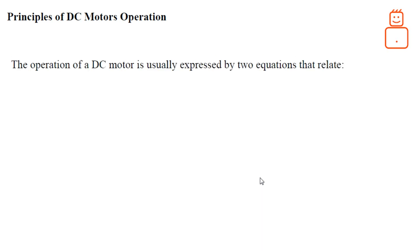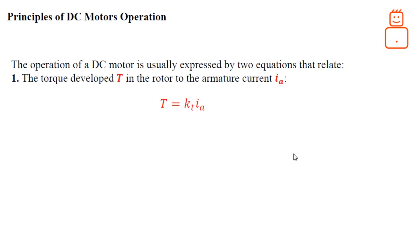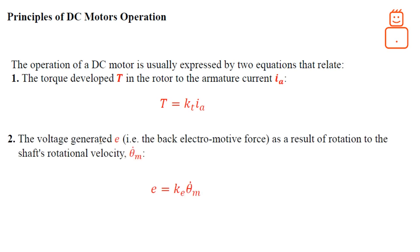DC motors have two key equations. The first relates the developed torque in the armature to the armature current: torque equals a constant multiplied by the armature current (T = K_t * i_a). The second relates the generated back-EMF to the rotational speed of the motor: the generated EMF equals a constant multiplied by the angular velocity (e = K_e * omega).